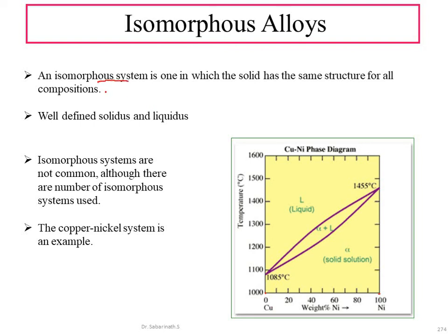What do we mean by an isomorphous system? An isomorphous system is one in which the solid has the same structure for all its compositions. Throughout the phase diagram, only one phase of solid will be present.